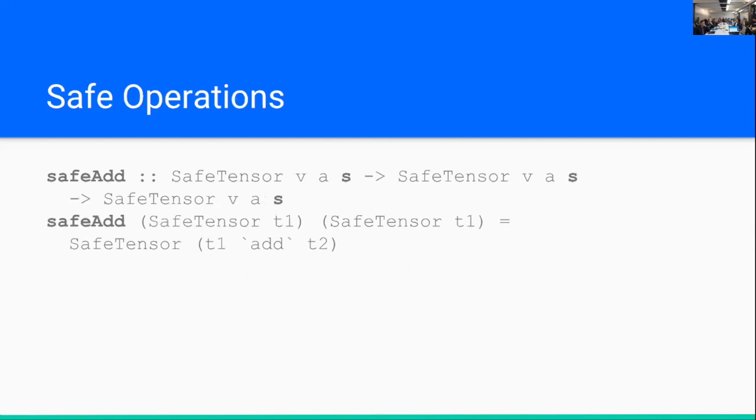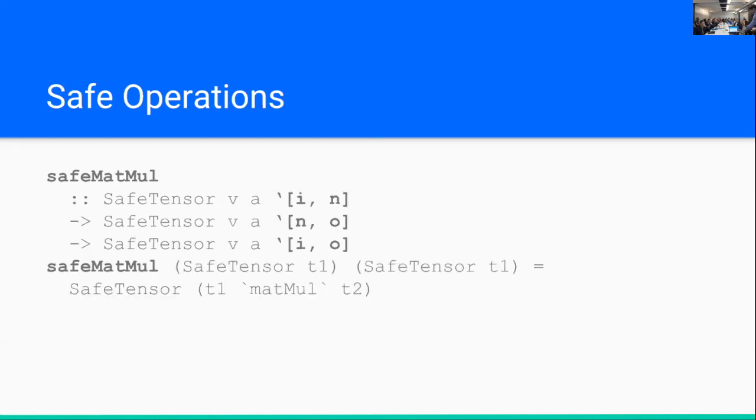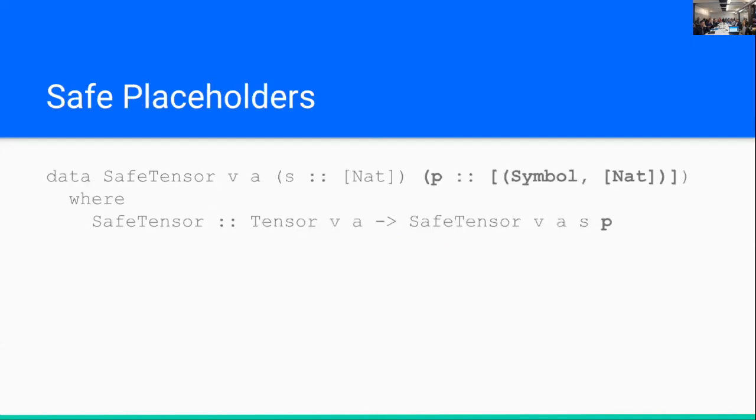And we can also create what I call safer operations. So we can use the safe add function. And this takes in two tensors. And we now enforce that these tensors have the same shape. And they produce another tensor that also has this shape. And matrix multiplication, we know we'll take an I by N matrix. We'll multiply by an N by O matrix. And as a result, we'll get an I by O matrix. Cool.